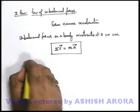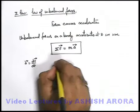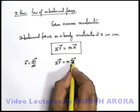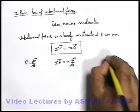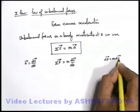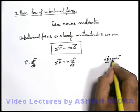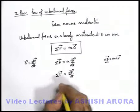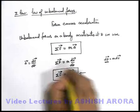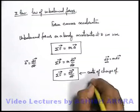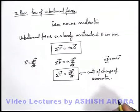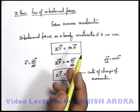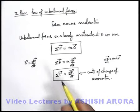We can also write acceleration vector as dv/dt, that is the rate of change of velocity vector. So the net force acting on a body is m into dv/dt. Mass multiplied by this change in velocity can be written as change in momentum dp, since mass into velocity is momentum. Therefore the summation of all unbalanced forces acting on a body can be written as dp/dt — that is, the net force equals the rate of change of momentum of the body. Newton's second law can be applied for a single body as well as for a system of bodies.